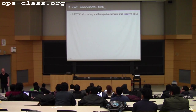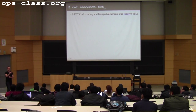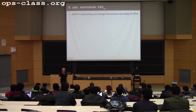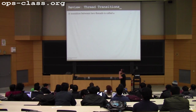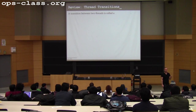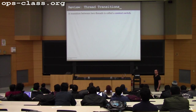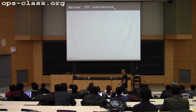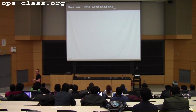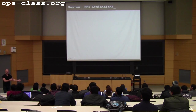Any questions about logistics before we go on? All right. So let's talk a little bit about thread transition. When I stop one thread and start another thread, what is that called? It's called a context switch. What were some of the CPU limitations we were trying to address? We've built up all this machinery — we can stop a thread at any point and restart another thread. Why are we doing this?